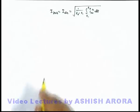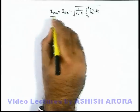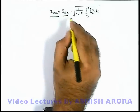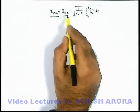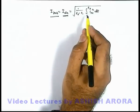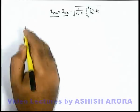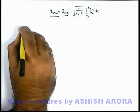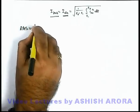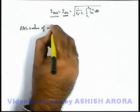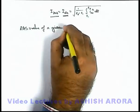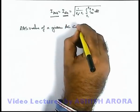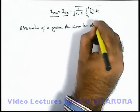Now as we have just calculated that RMS current is defined as the DC value which produces the same amount of heat in a resistance R, so here we can also write down that RMS value of a given alternating current can be defined as